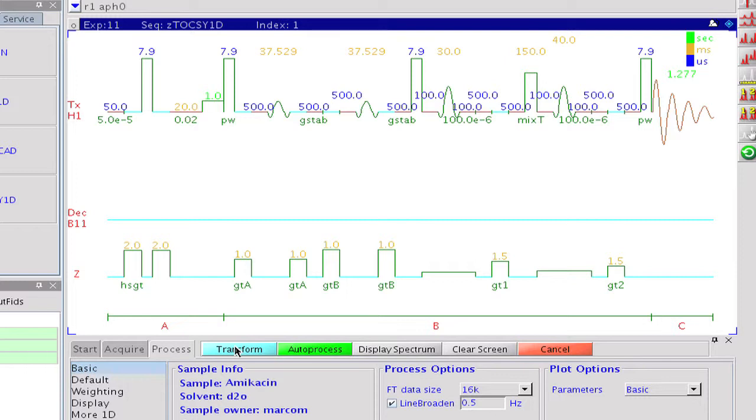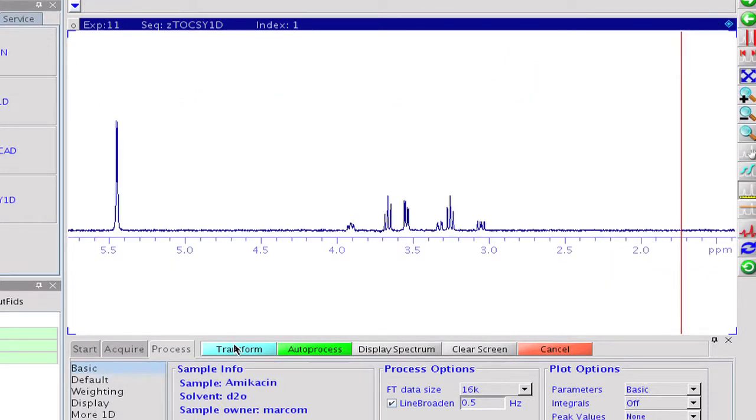While acquisition is running, the completed data files can be transformed at any time. We have now the sugar ring that has its anomeric proton at 5.5 ppm. The spectrum is clean. There is no crosstalk from other spin systems. The multiplets are undistorted and high resolution conditions are fully retained. Coupling constants are easy to extract and can be used to determine the relative configurations of the asymmetric carbon atoms in the sugar ring.